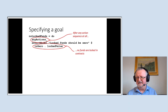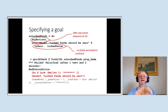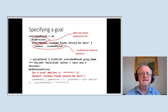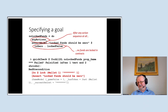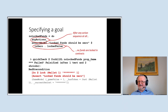When we give this property to QuickCheck, it finds a counterexample quickly — just one test and two shrinking steps. It found that after wallet one locks one ADA with the secret password, the assertion that locked funds should be zero is not true. Of course it's not true — we've just locked one ADA. But this just shows what happens when you have a strategy that doesn't work: the null strategy doesn't work.